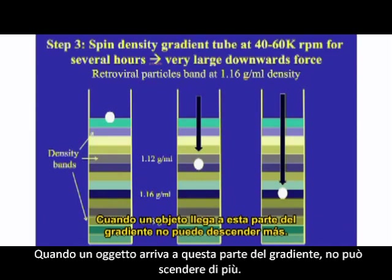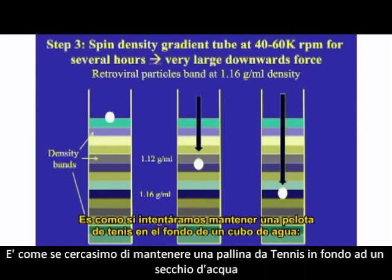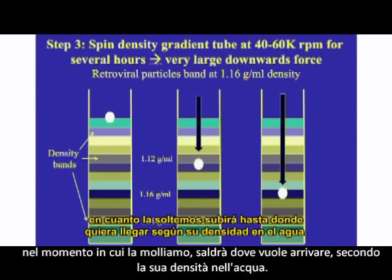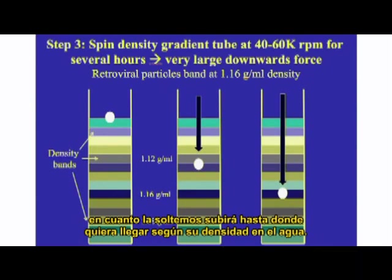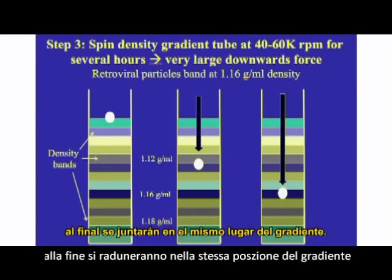When an object gets to this portion of the gradient, it cannot go any further. It is exactly like trying to force a tennis ball to stay put at the bottom of a bucket of water — as soon as you let it go, it bounces back up to where it wants to float according to its density in water. This means that in the sucrose density gradient, all objects of the same density will eventually congregate at the same place in the gradient.